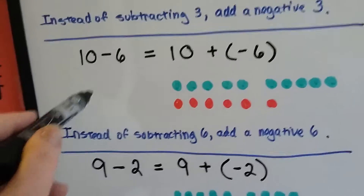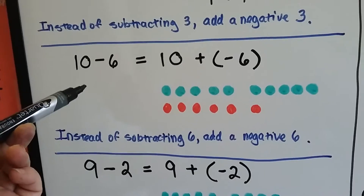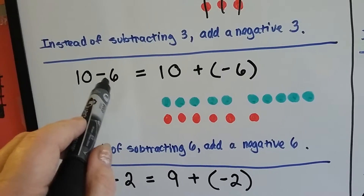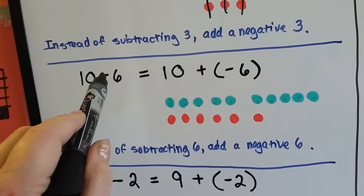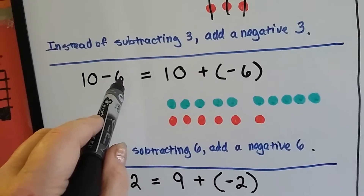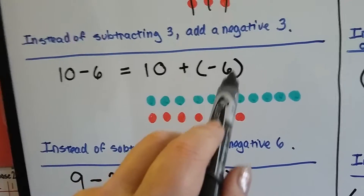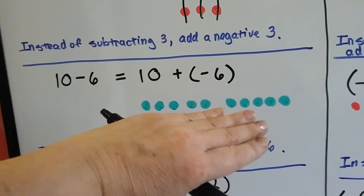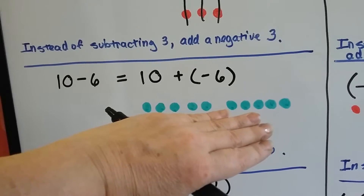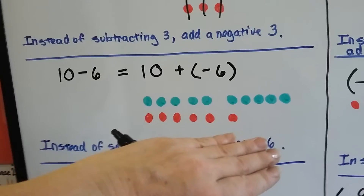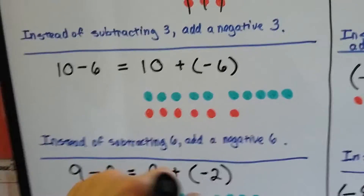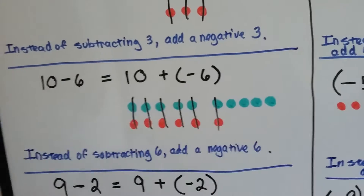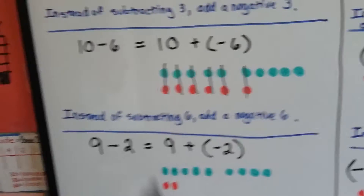Now we've got 10 minus 6. We're going to turn it into 10 plus negative 6 — switch the minus to a plus sign and turn positive 6 into negative 6. That means we have 10 green chips, and we're going to add 6 red negative ones. They cancel each other out as zero pairs, and that leaves 4 positive.